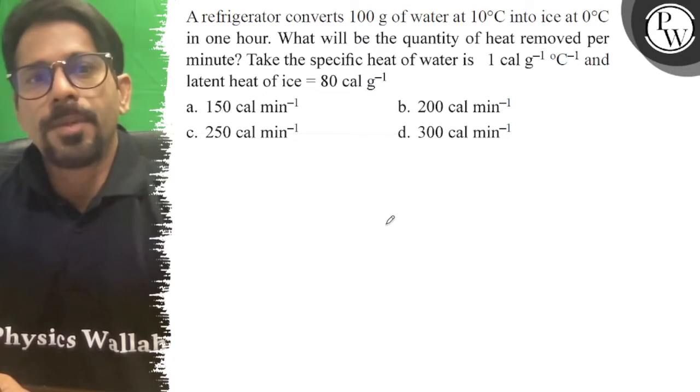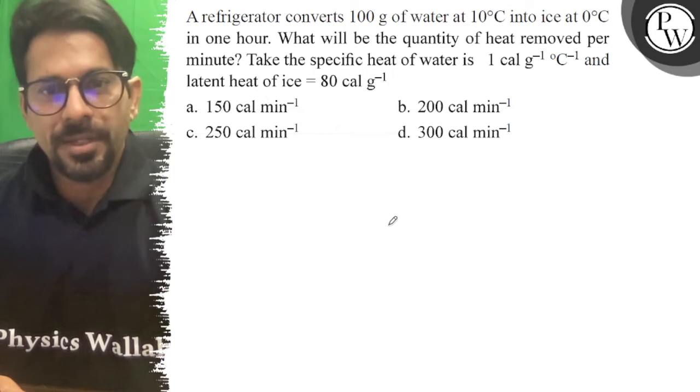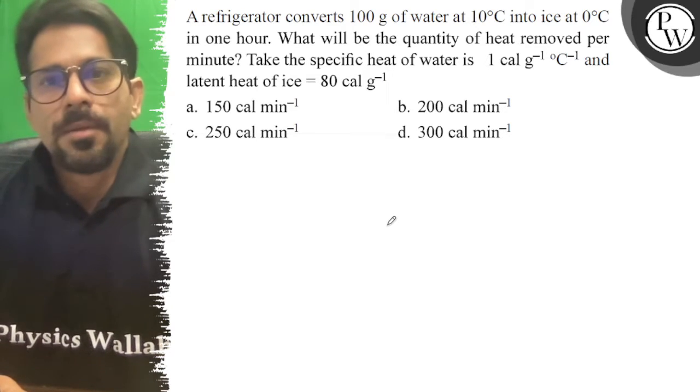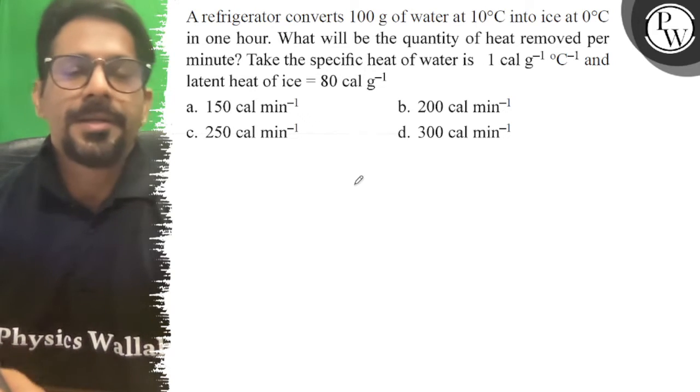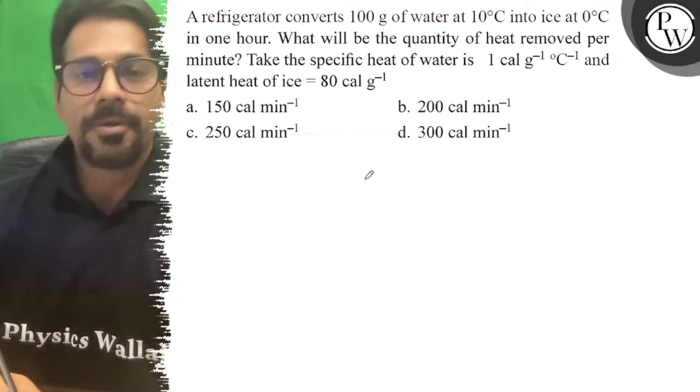What will the quantity heat removed per minute? Take the specific heat of water is 1 calorie per gram inverse celsius inverse and latent heat of ice is 80 calorie per gram.